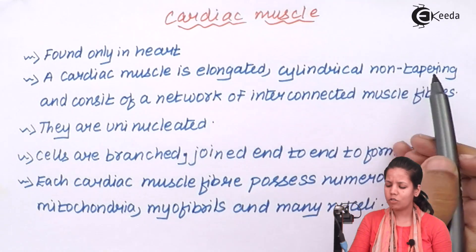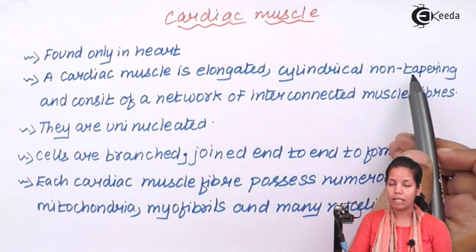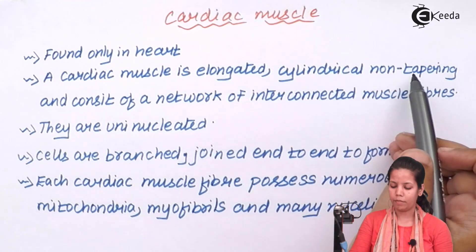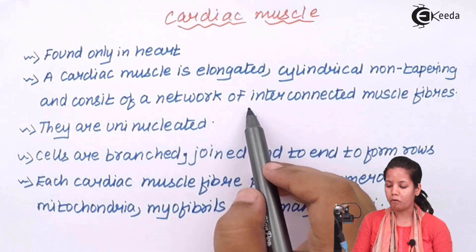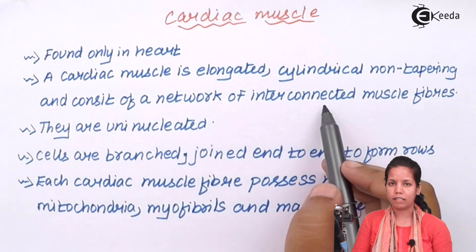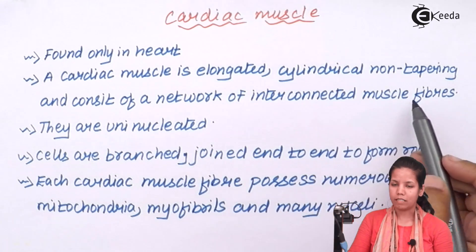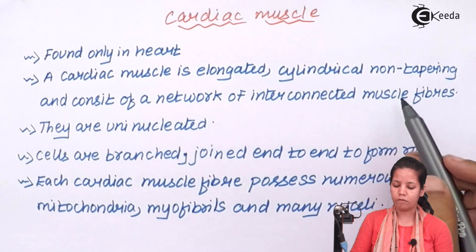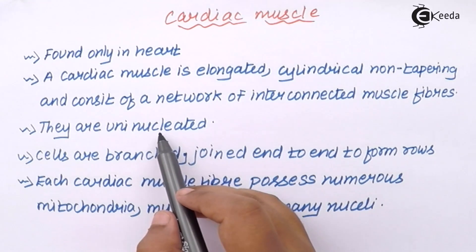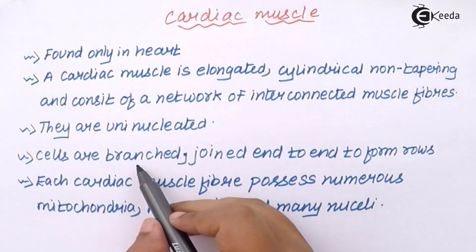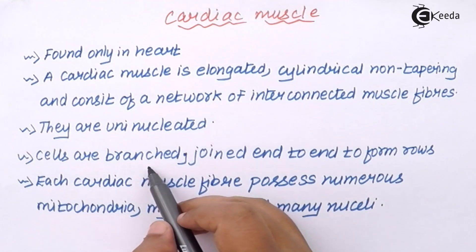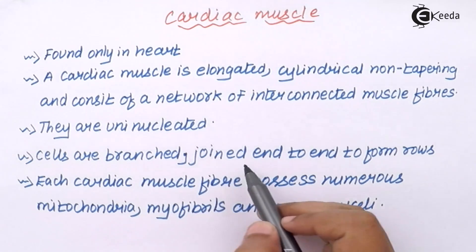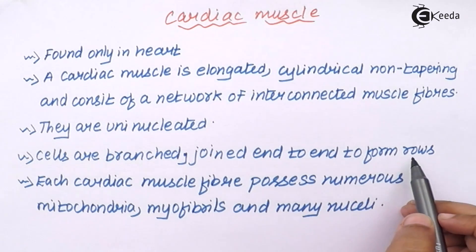A cardiac muscle is basically elongated, cylindrical, and non-tapering — it never tapers towards the end. It consists of a network of interconnected muscle fibers. These muscle fibers are uninucleated, and the cells in this region are branched and joined end to end to form multiple rows.